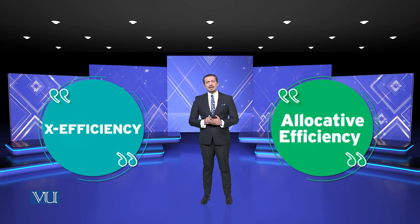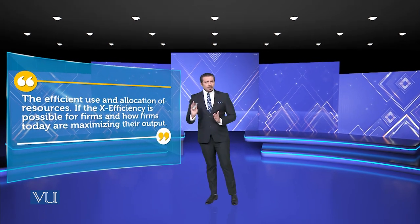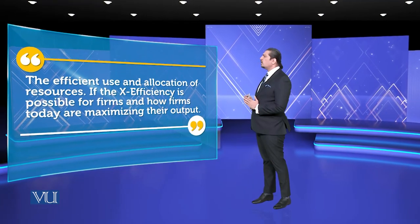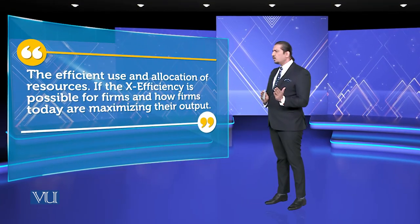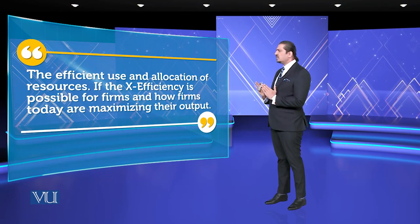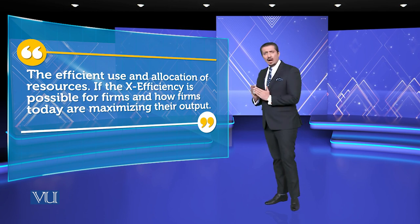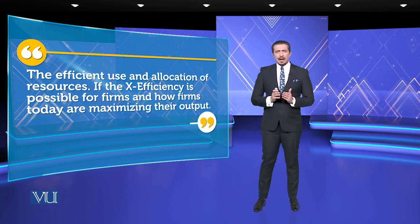X-Efficiency کے بعد انہوں نے allocative efficiency کے اوپر بھی بات کی۔ Harvey صاحب کی definition بڑی اہم ہے۔ اس module میں ہم efficiency کا resource allocation کے ساتھ استعمال دیکھیں گے، اور یہ بھی کہ firm کے لیے X-efficiency کیسے ممکن ہے اور firm اپنا output کیسے maximize کرتی ہے۔ یہاں سمجھنا ضروری ہے کہ individual اپنی selective rationality تک پہنچ سکتا ہے، complete rationality تک نہیں۔